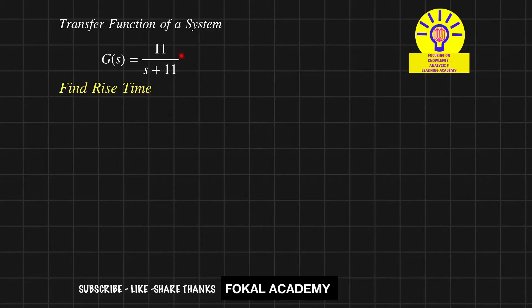In this problem, a transfer function is given for a system: G(s) = 11 / (s + 11). This is a first order transfer function.